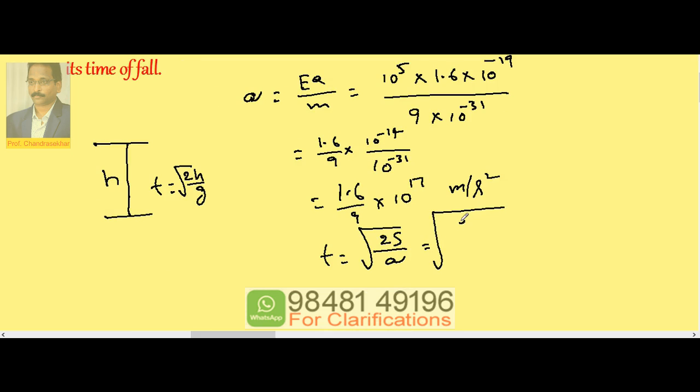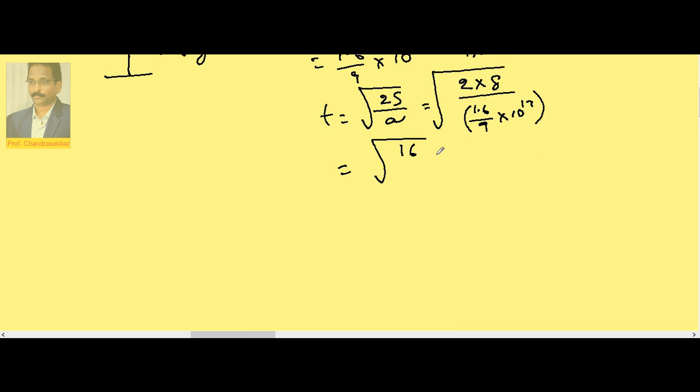So this is equal to 2 into 8 divided by 1.6 by 9 into 10 to the power of 17. I will take it as 16 divided by 16 by 9 into 10 to the power of 16. 10 to the power of 17, I will take 10, 10 into 1.6 is 16. If I cancel these two, then 9 goes to numerator.